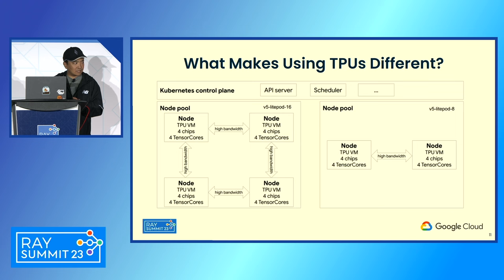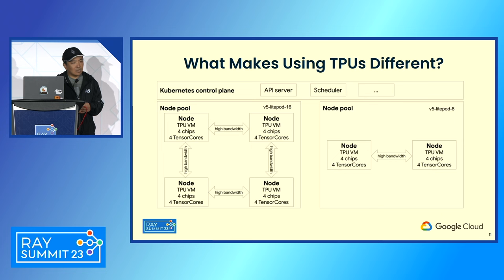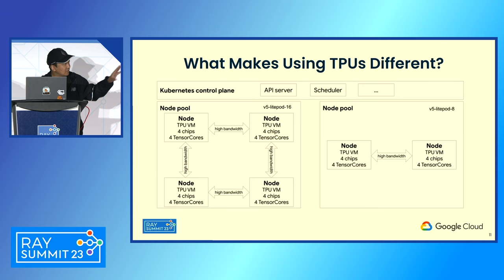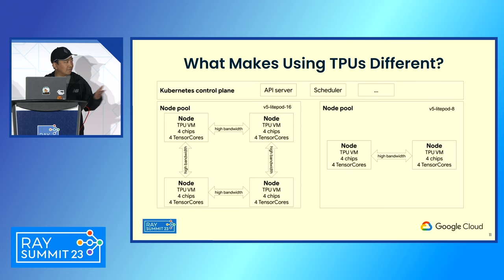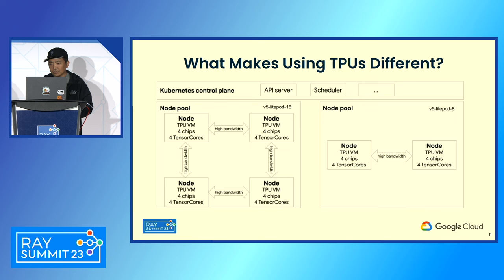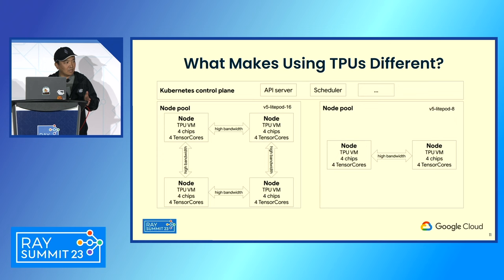You can use multi-slice to connect TPUs together. Several TPUs are connected with high bandwidth interconnect, enabling high throughput. In Google Kubernetes Engine, each of these corresponds to a node pool. When you create this node pool, you must allocate it with a specific topology type — for example, a two-by-two-by-four, which specifies the total number of chips and TPU hosts.